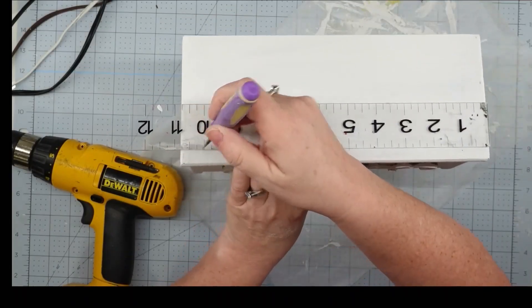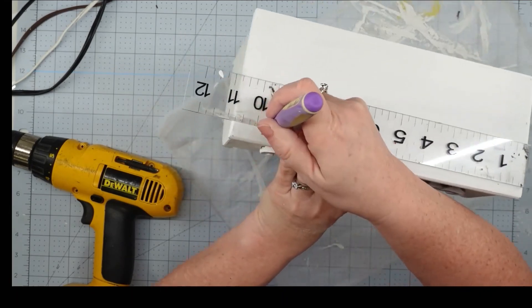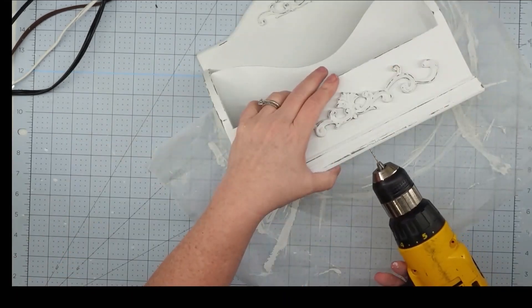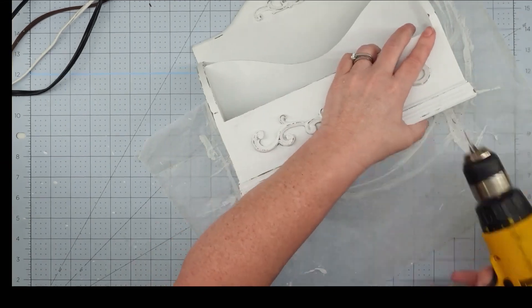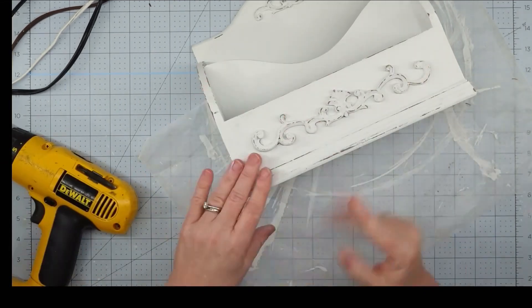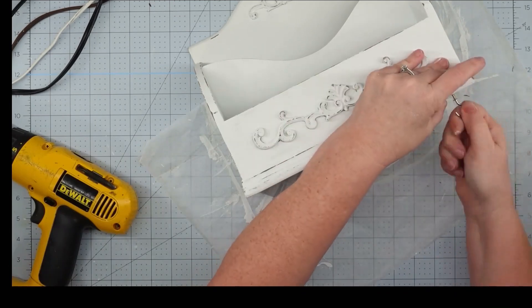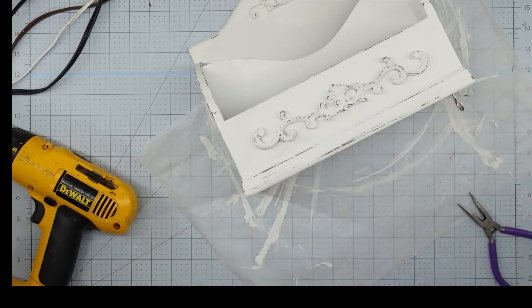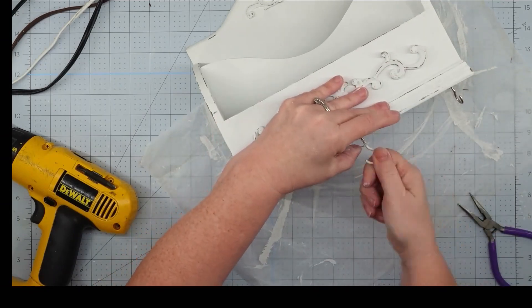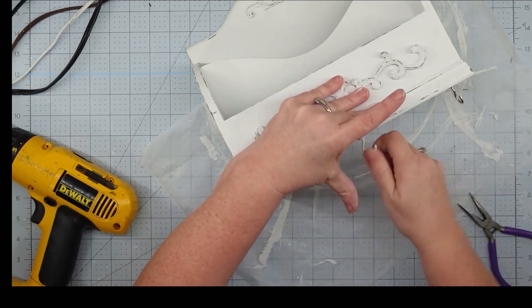Since this is going to be hanging up, I thought that it would be nice to put some cup hooks on the bottom. This is just going to give them some more storage. They can hang their keys or whatever from that. So I marked this off. I put a hole in the center and one on each side. I'm going to do a little starter hole with a small drill bit, and then I'm going to screw in some cup hooks.